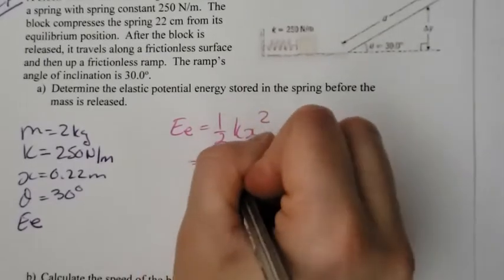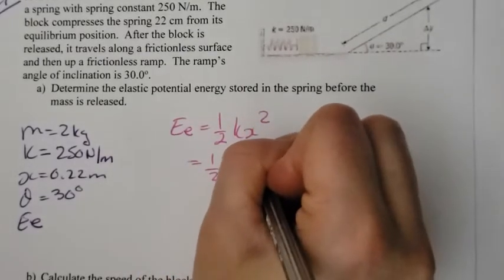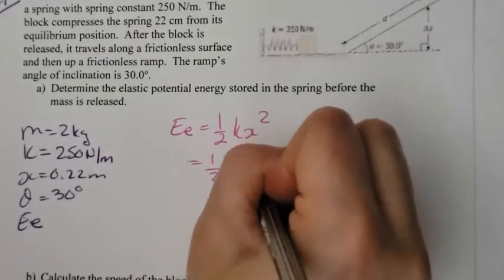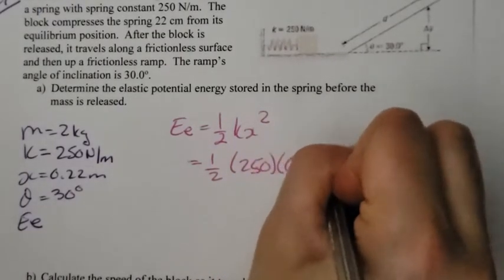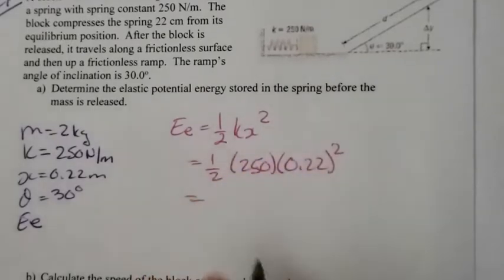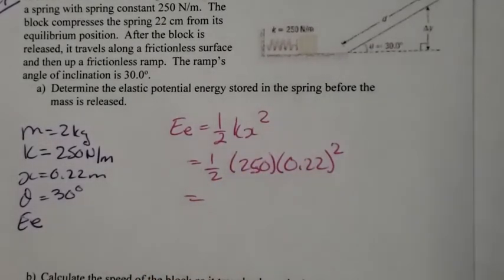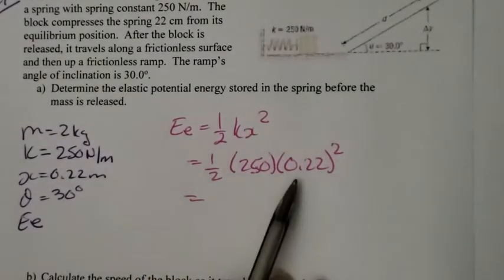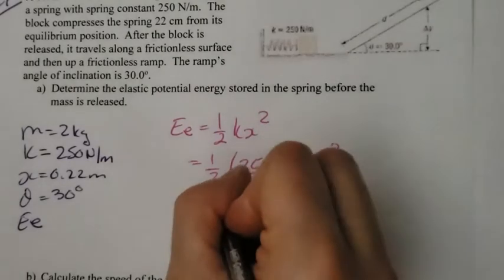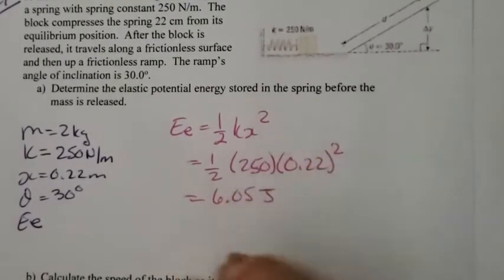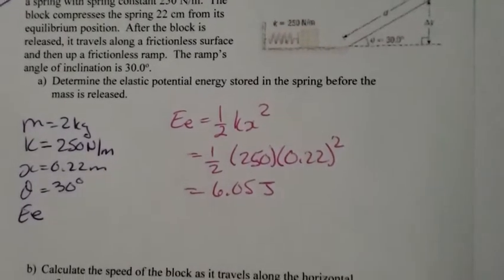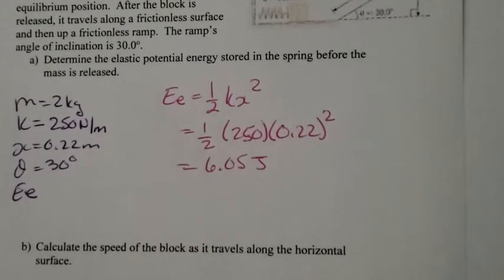Plug in everything that you know. On my calculator, I'm going to go one-half times 250 times 0.22 squared, and I end up with 6.05 joules. I need to round this to two significant digits, so I would just round it to 6.1.